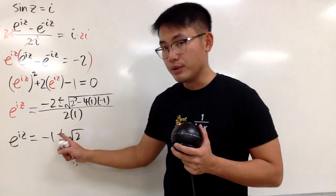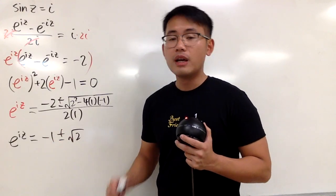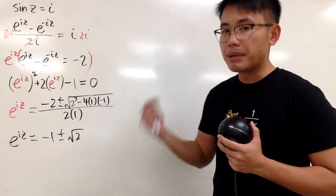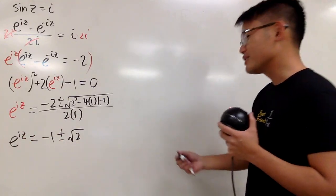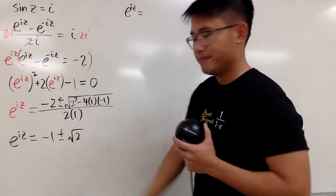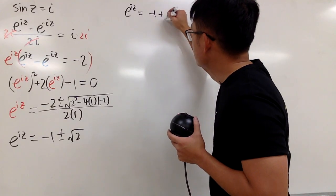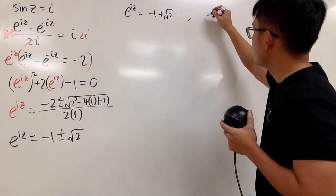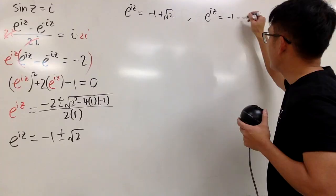Now, we have two situations, negative 1 plus square root of 2, or negative 1 minus square root of 2. I'm actually going to separate them, because negative 1 plus square root of 2 is a positive value. I can just take the natural log naturally on both sides. That's okay. So let me just write down this right here for you guys. e to the iz first gives us negative 1 plus square root of 2. And then on the other hand, we get negative version right here, so I'll write it down as well. e to the iz equals negative 1 minus square root of 2.